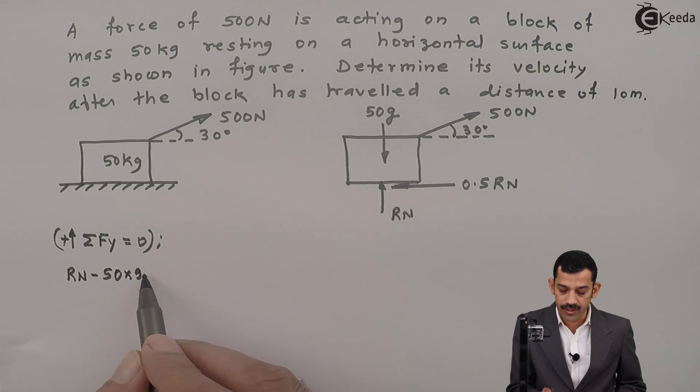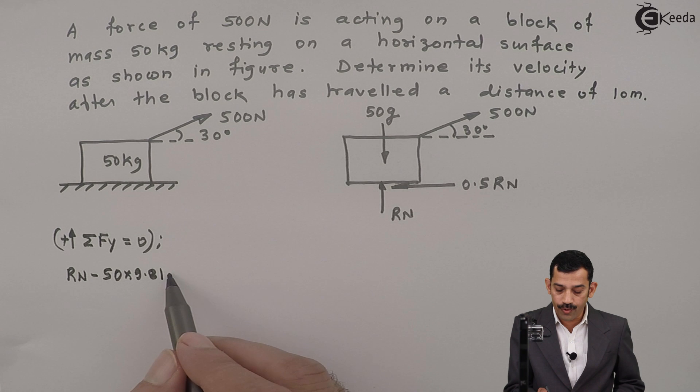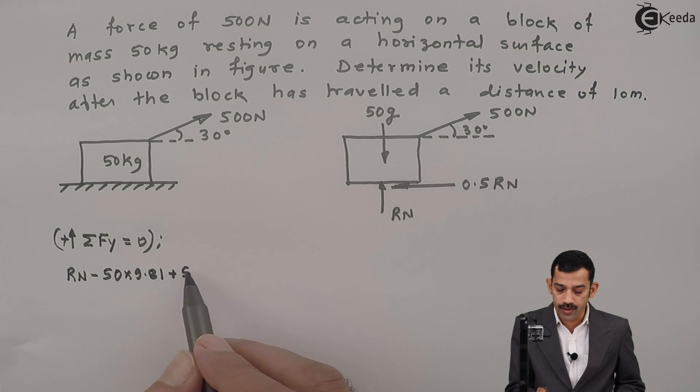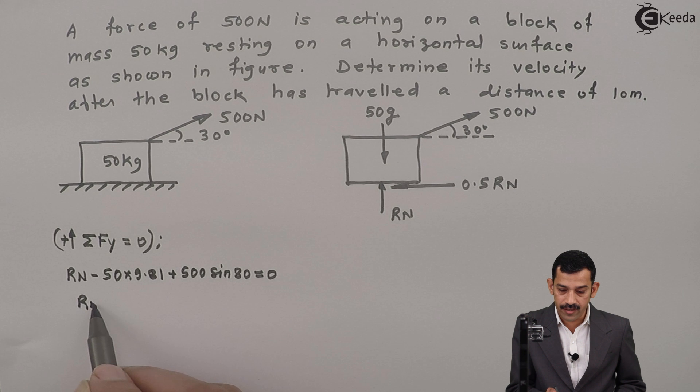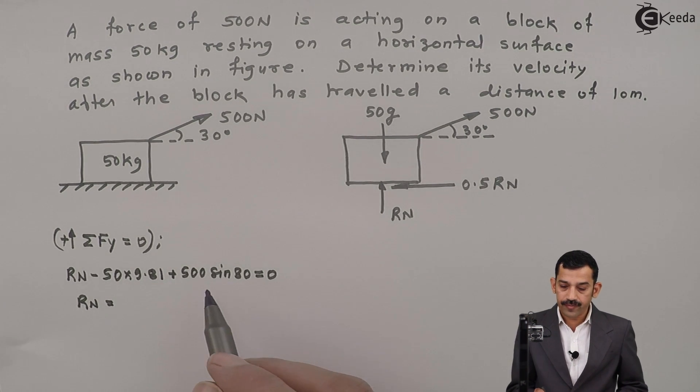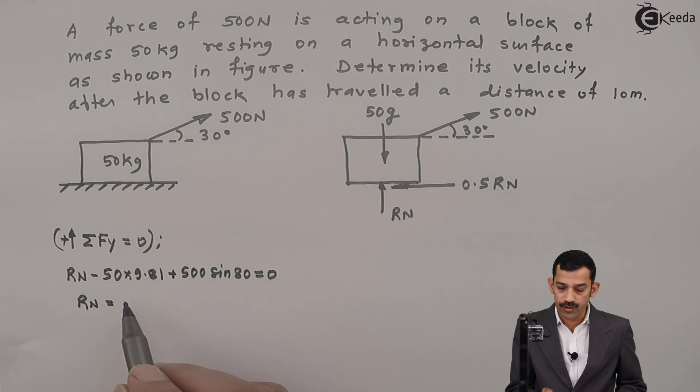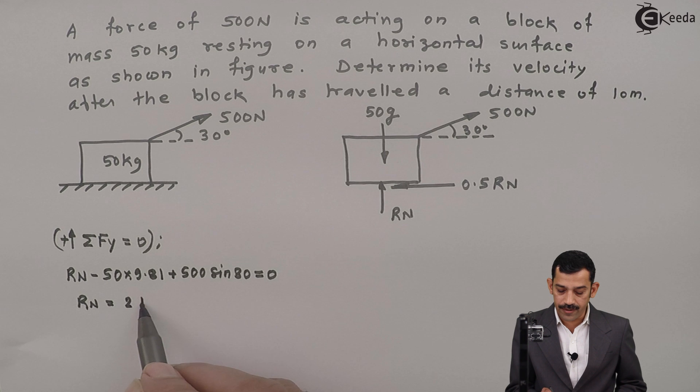50 into G is 9.81 I will substitute here. Component of 500 acts in upward direction, the 500 sin of 30. This one is equal to 0. Therefore normal reaction comes out to be, if we will calculate using calculator, this value comes out to be 240.5 Newton.